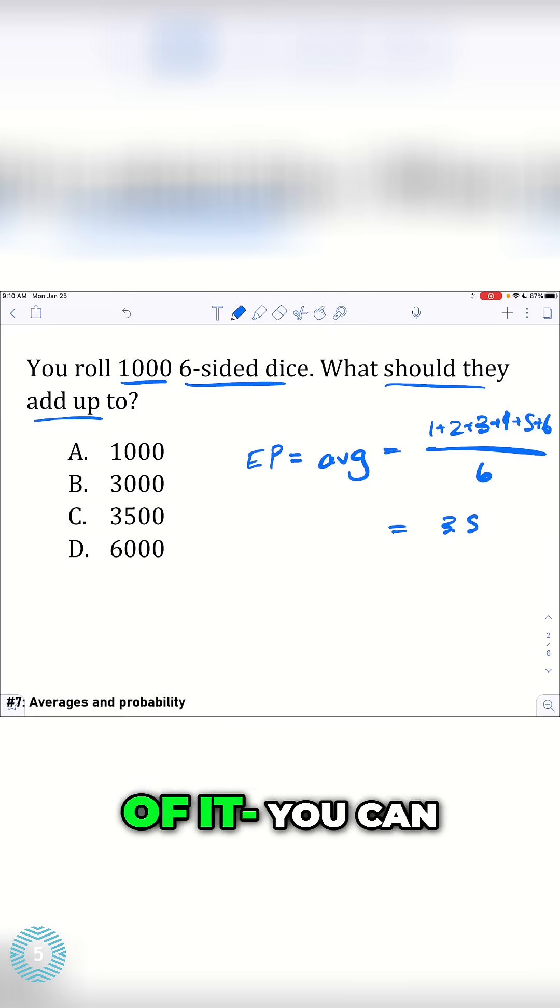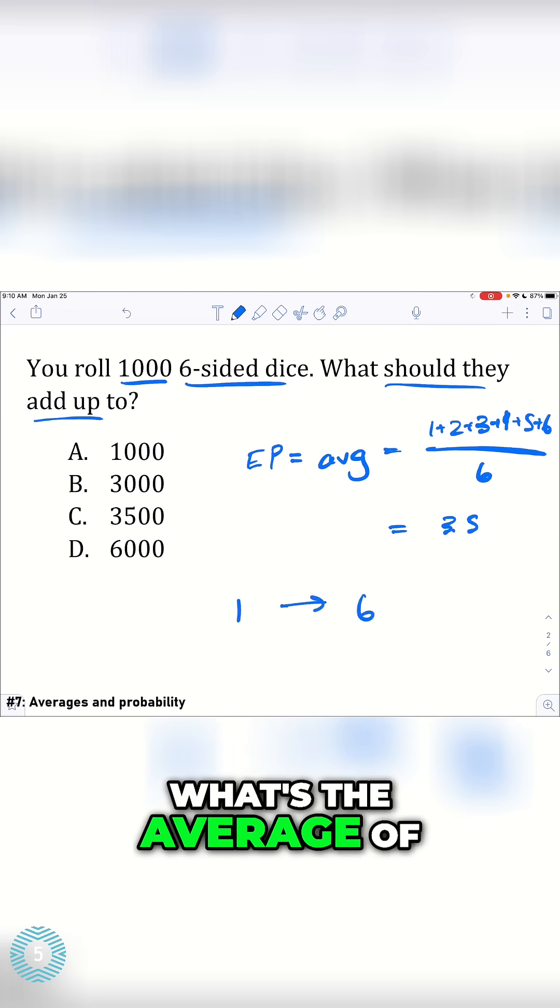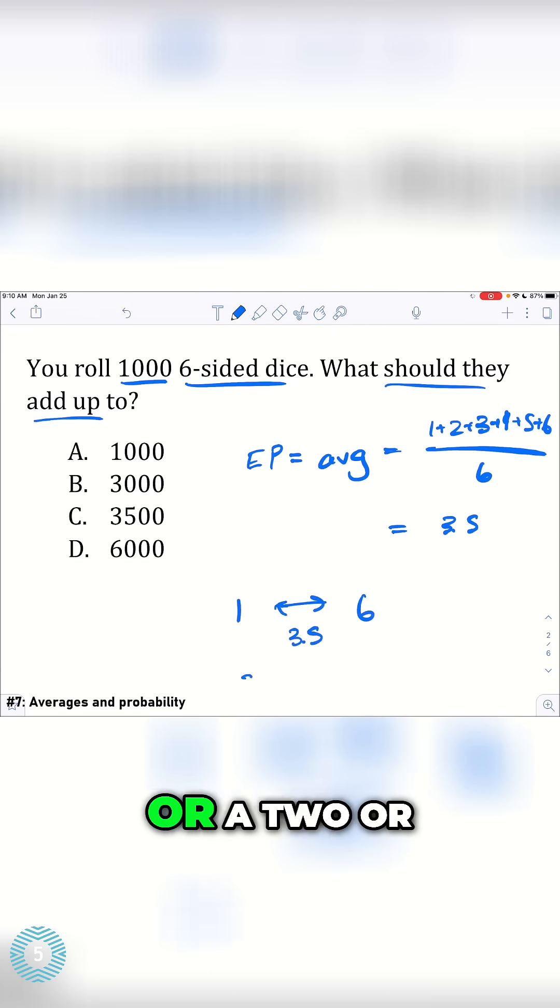Okay, so for any given roll, I mean, think of it, you can get a 1 or a 6, right? What's the average of these two? Well, it's 3.5.